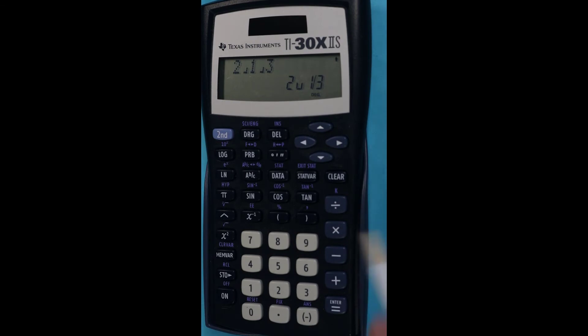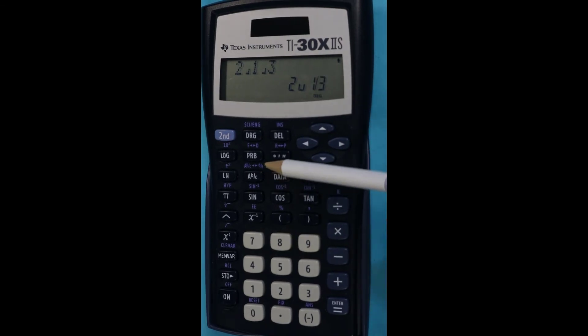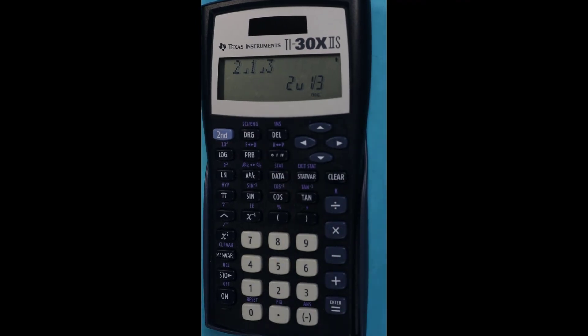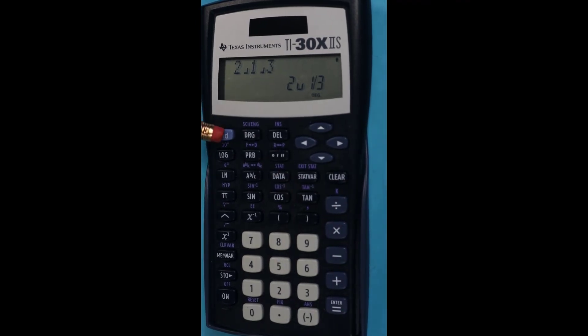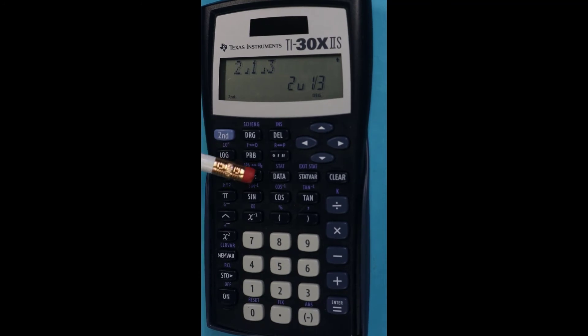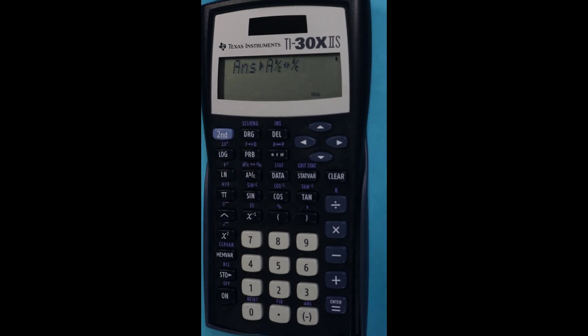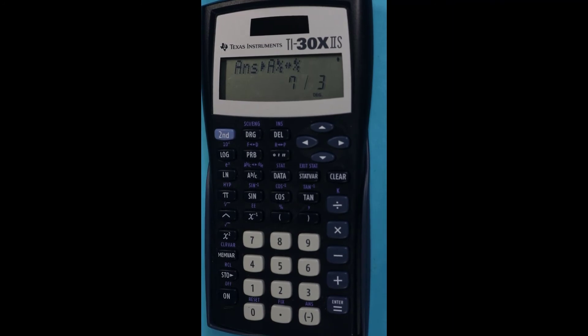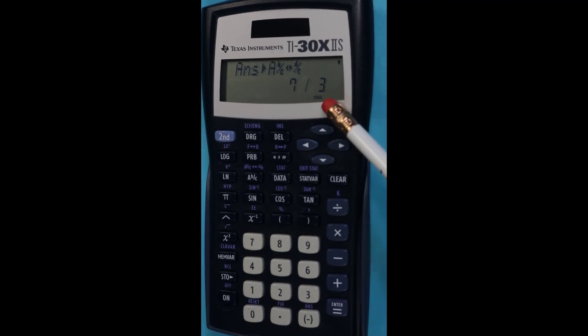So let's say we want to get out of mixed number form and go to improper form. Since this is off the button, the calculator button, I need to press the second function first and then hit this fraction key and I'll have to press enter. And when I do that, you will now see an improper 7/3 displayed.